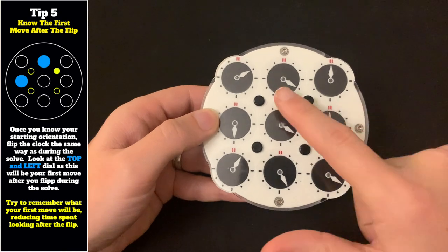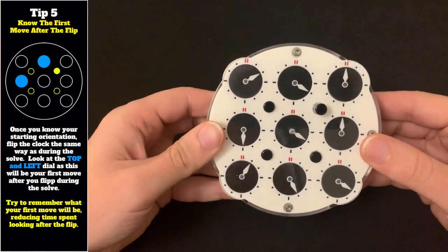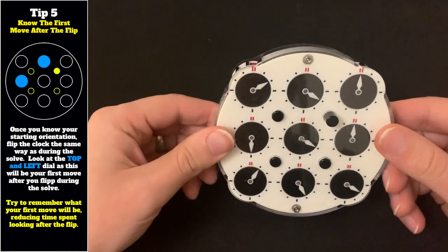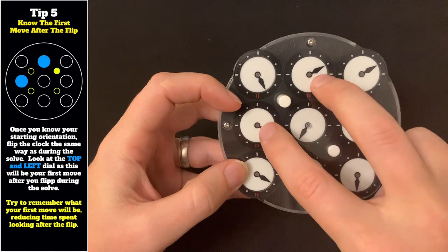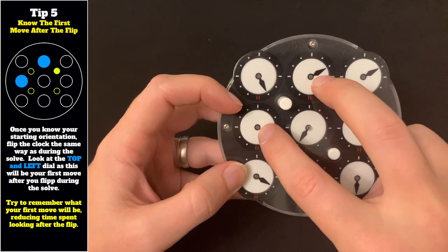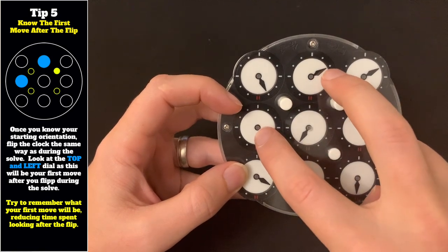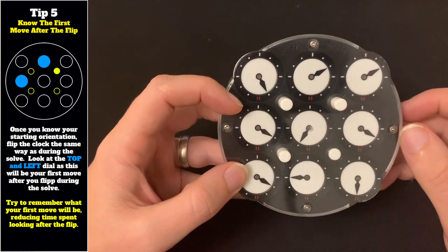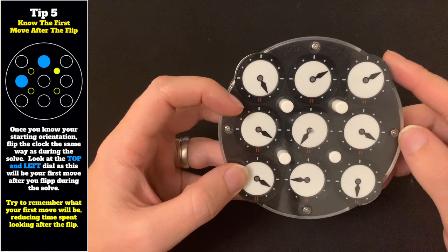So during your inspection, once you've found your starting position and you've got the correct orientation, the last thing before you start the solve is to flip the clock like you would during the solve and take a note of these two dials, as these would be the first part of the cross on the back to start solving. So I now know that these are fairly close, so it's not going to take much to solve, and I'd have to go two clicks positive on this wheel.